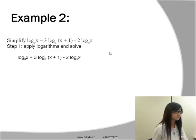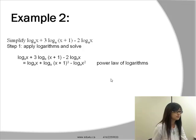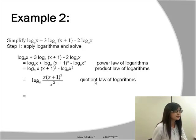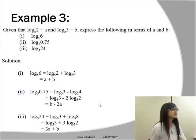In step one, we apply the logarithm laws and solve. Starting from the original equation, we use the power law: the 3 becomes a power on (x+1), giving (x+1)³, and the 2 becomes a power on x, giving x². Then we use the product law to multiply x and (x+1)³ together. Finally, we use the quotient law to divide, and the x terms cancel, giving our final answer.